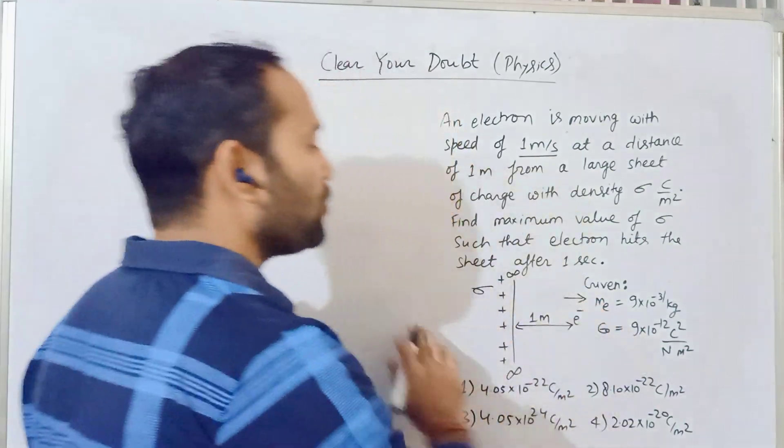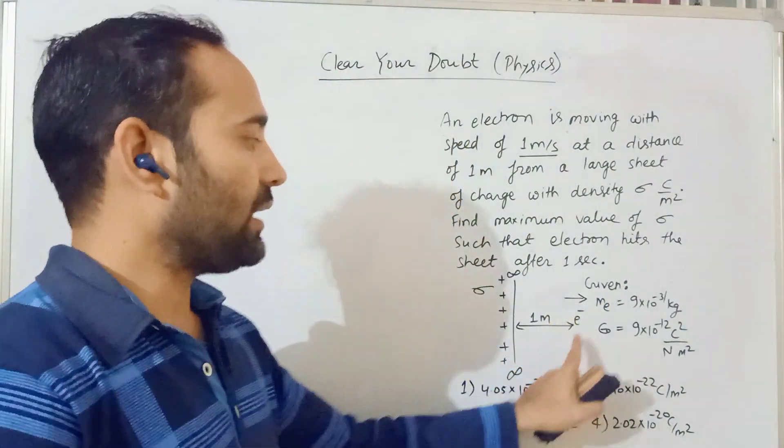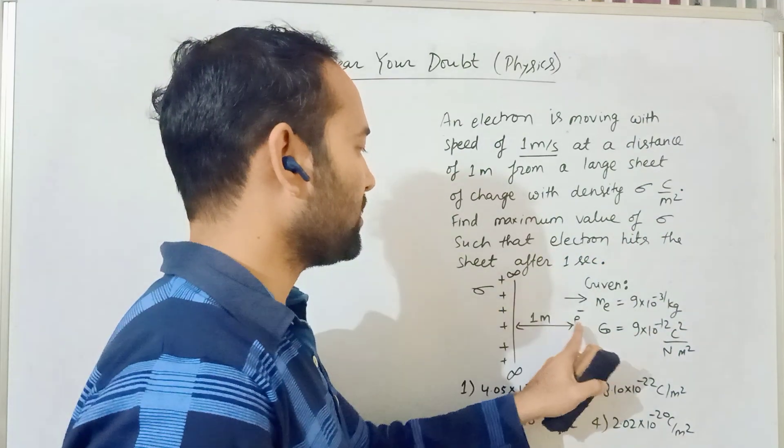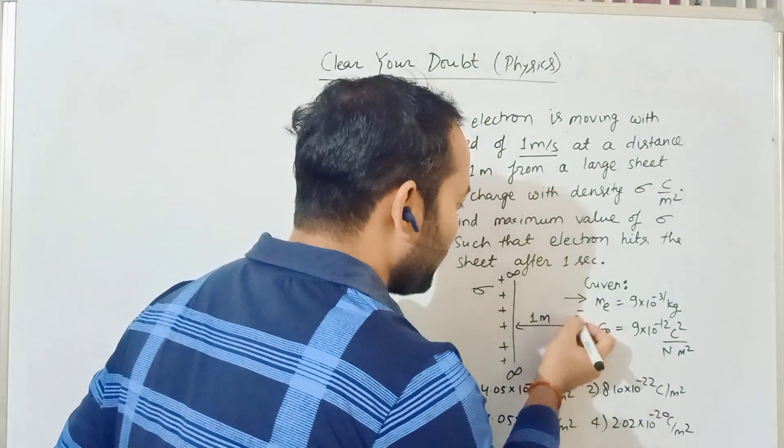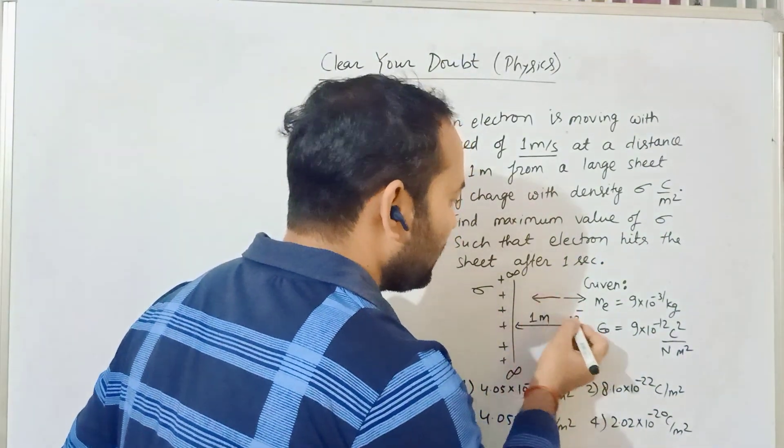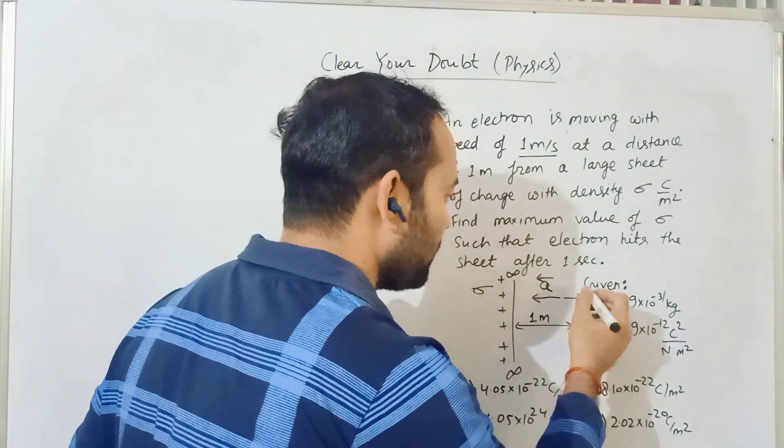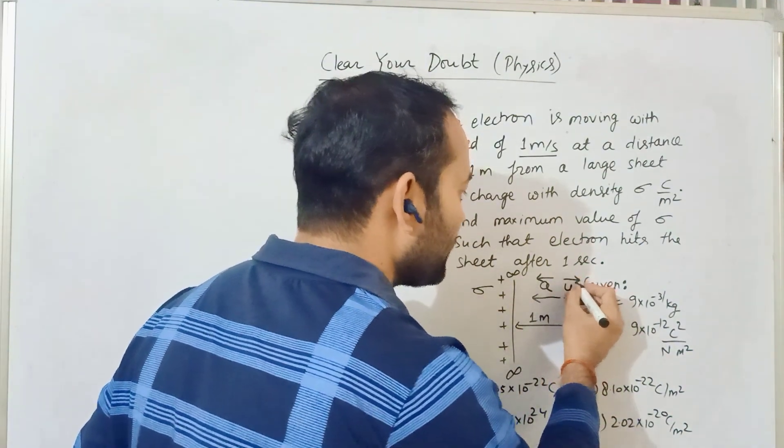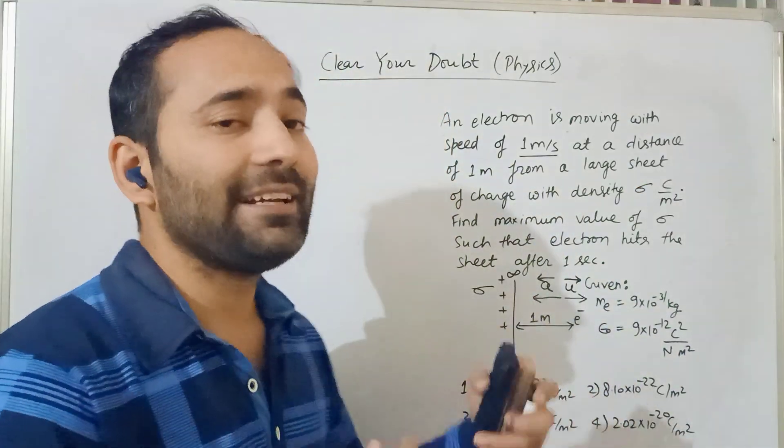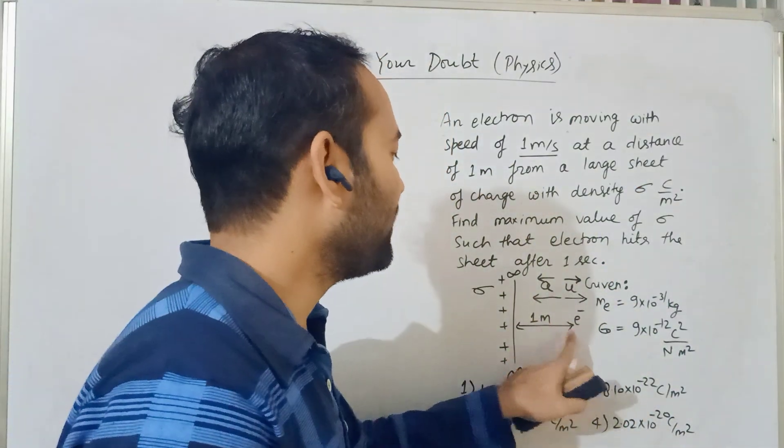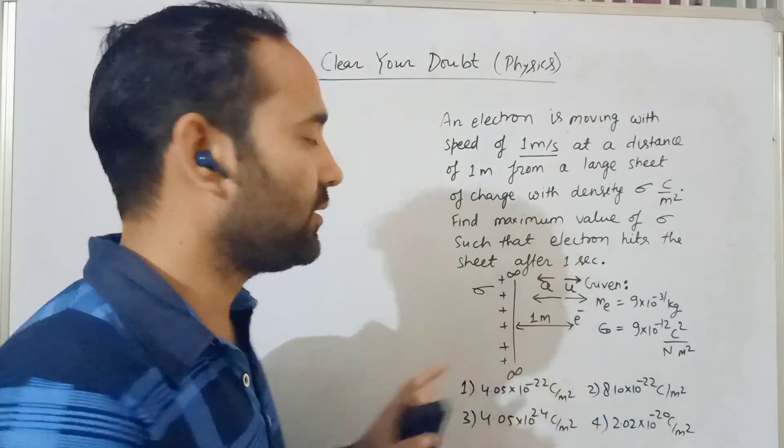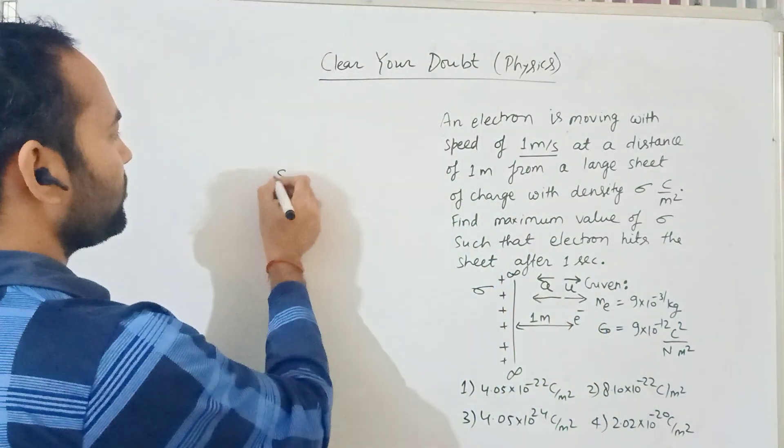This direction is opposite to that, and you need to find out the sigma max that will attract in this direction. That means acceleration is in this direction - that's why it will take some time to hit the charge sheet.